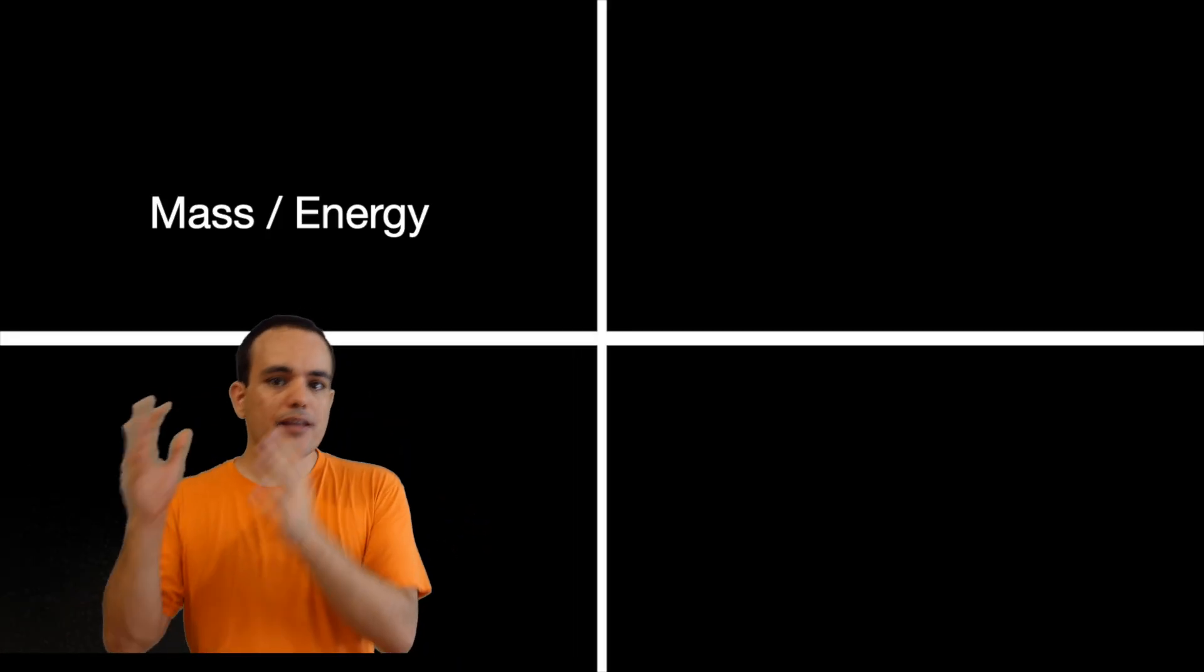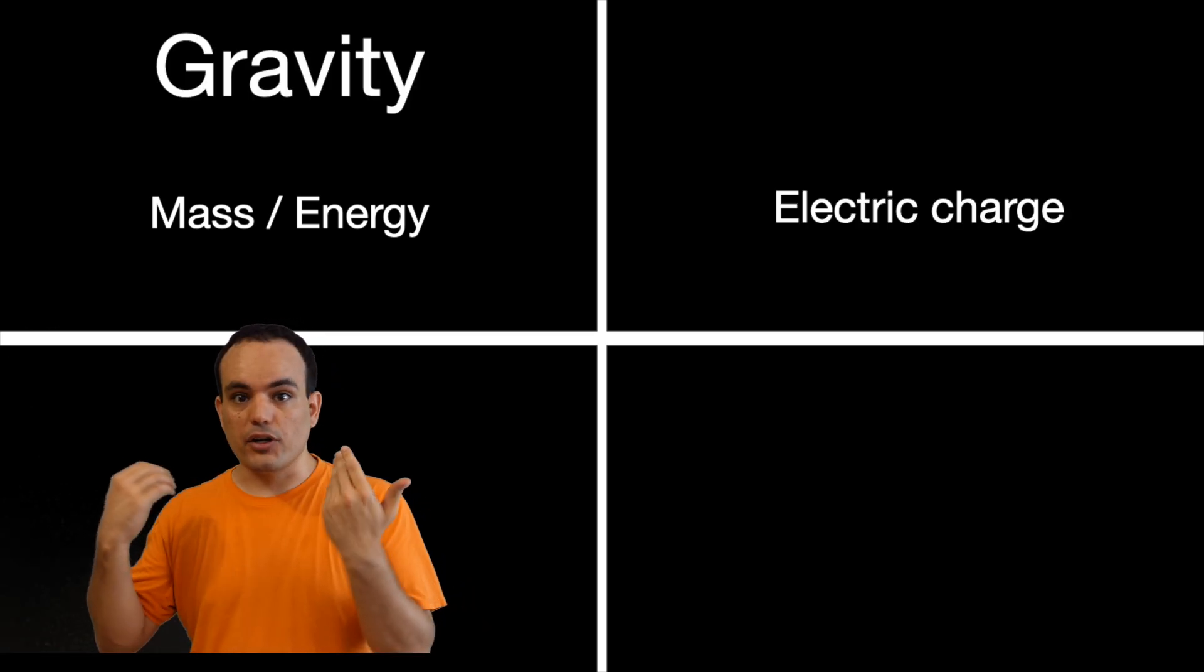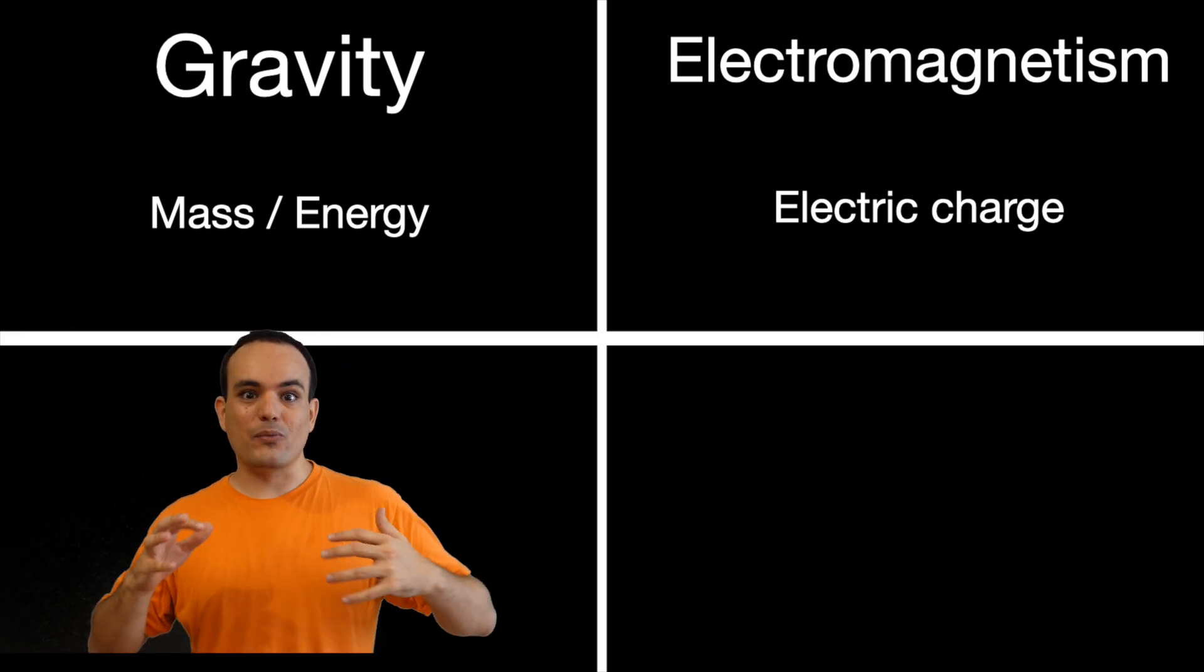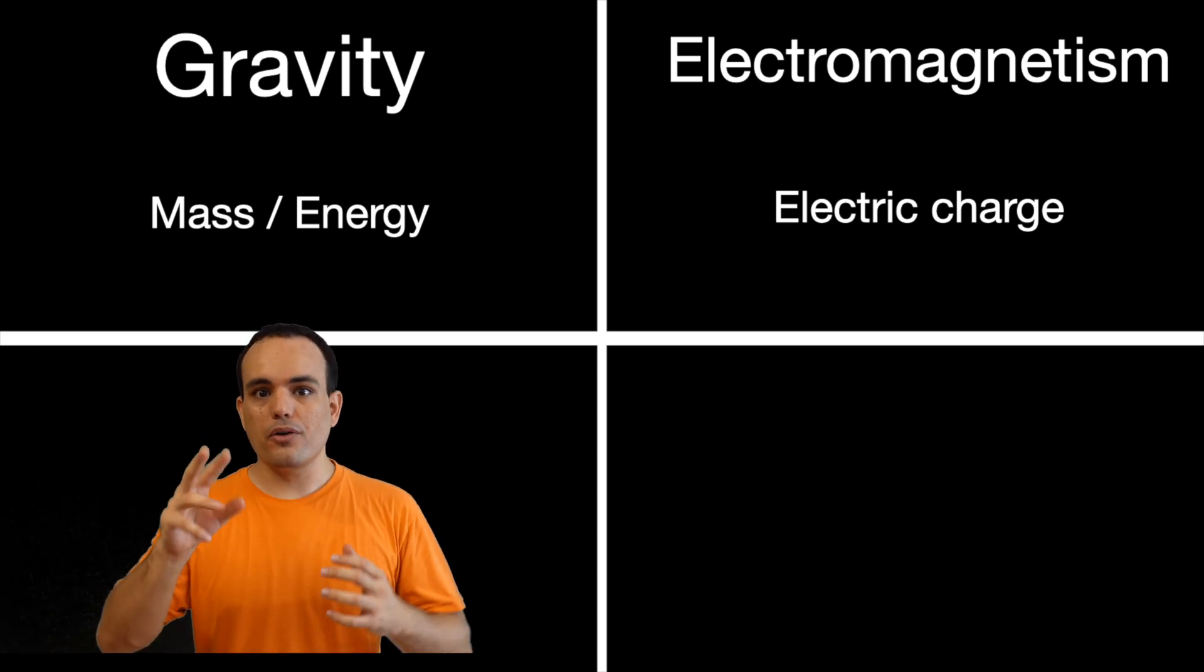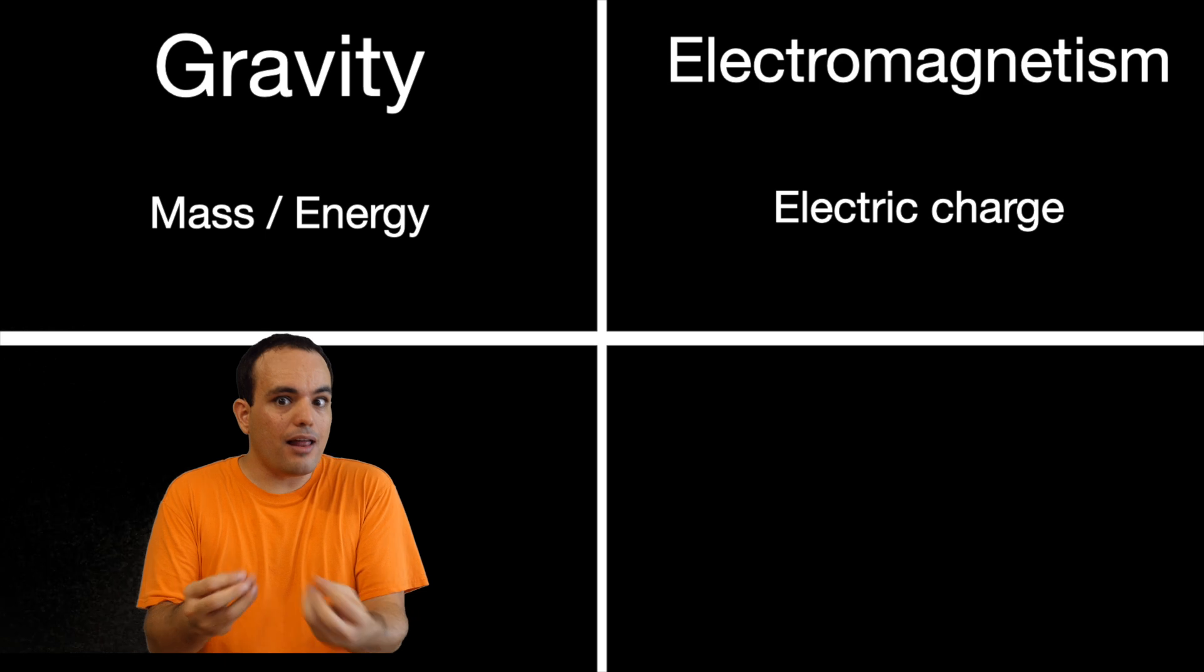One of the great discoveries of the standard model is that particles interact in different ways depending on their properties. For example, their mass and energy allows them to interact with gravity, while their electric charge allows them to interact with electromagnetism. Hopefully, you are already familiar with these two kinds of interactions, but there are two more that you don't encounter in your everyday lives, but they are still real and important.